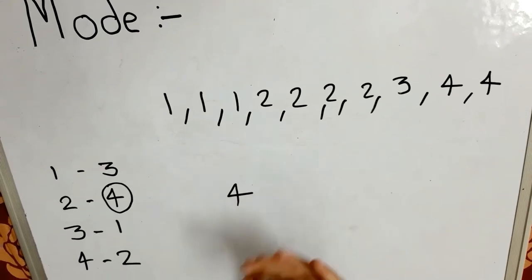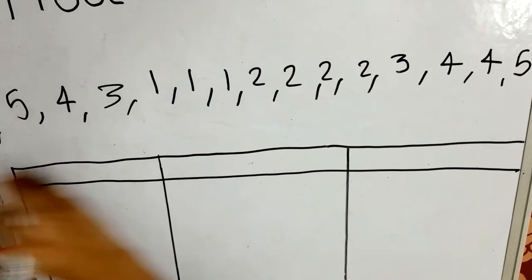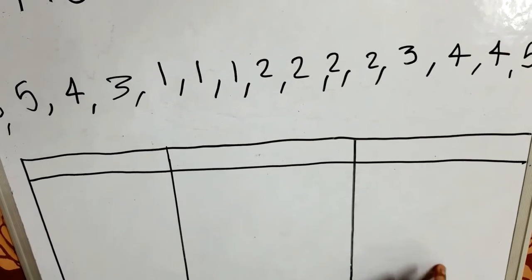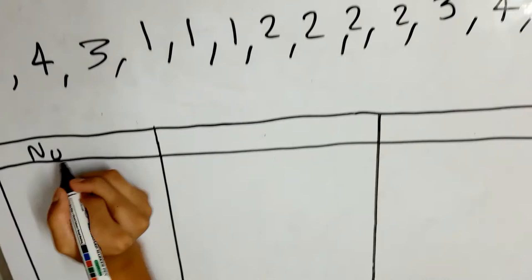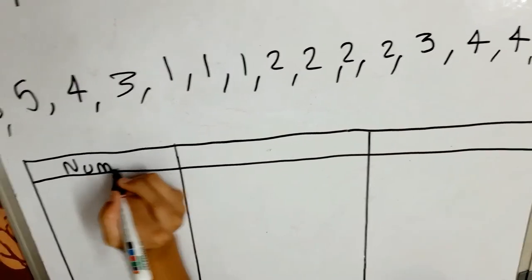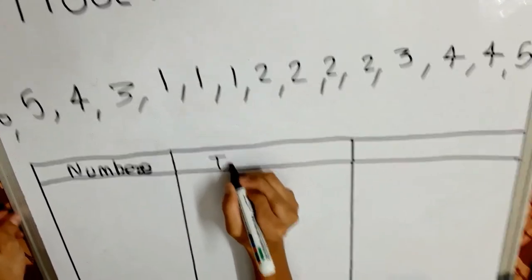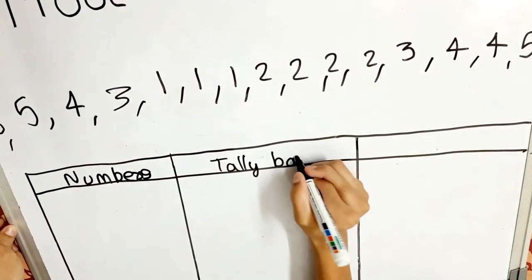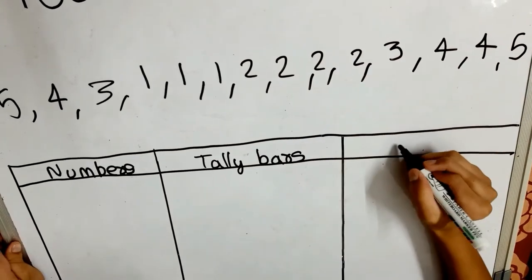Now we will learn how to find the mode of larger data. To find the mode of large data, first you have to create a table with three columns: numbers, tally bars, and frequency.